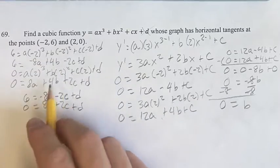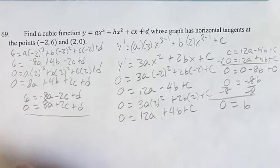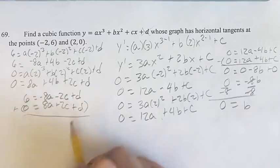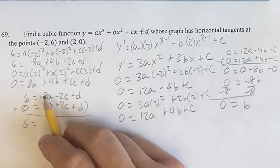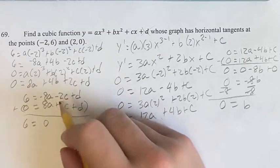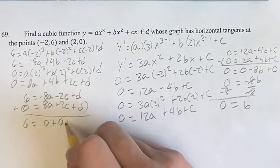Again, just basically crossing out those 4b terms because they're now equal to 0. Doing elimination here, we can add these two. We get 6 plus 0 is 6. Negative 8a plus 8a is 0. Negative 2c plus 2c is 0. And d plus d is 2d.